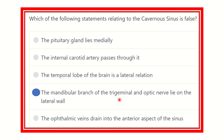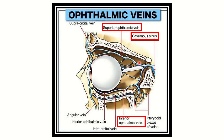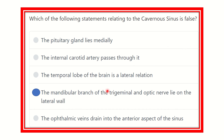The mandibular branch of the trigeminal nerve (V3) is not present within the cavernous sinus. The optic nerve also has its own dedicated channel — the optic canal — through which it passes. Regarding the last option, the ophthalmic vein drains into the anterior aspect of the sinus — this is true, as we saw the superior ophthalmic vein drains into the anterior part of the cavernous sinus. Therefore, the false statement is that the mandibular branch of the trigeminal nerve and optic nerve lie within the cavernous sinus. Thank you.